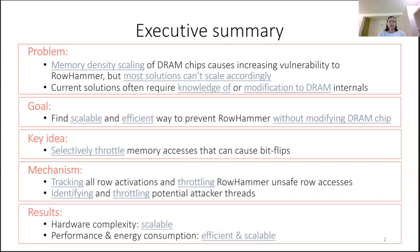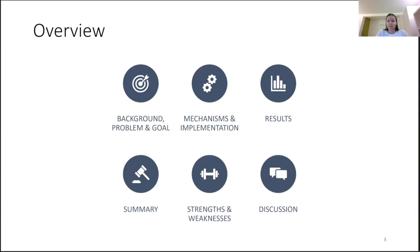We throttle accesses to rows activated too frequently within a specific time window, and try to mitigate the rowhammer attack at the thread level to minimize performance degradation on benign applications. The results show the proposed solution is very scalable in terms of hardware complexity, performance, and energy consumption, with significantly better performance and lower energy consumption than other mitigation mechanisms during a rowhammer attack. The presentation will also include a discussion of strengths, weaknesses, and future developments.